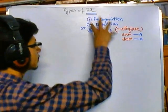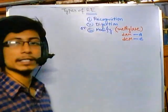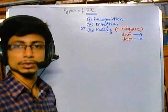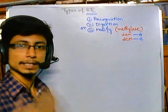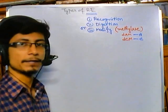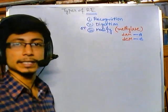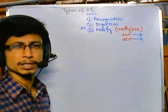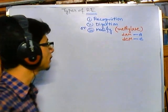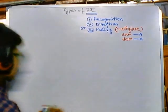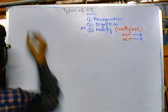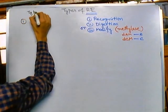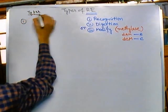Now, depending upon the source of restriction enzyme and biochemical activity, we can divide restriction enzymes into three different major types. Let me write the types: the first one is isoscizomer, the second one is neoscizomer, and the third one is isochodomer.